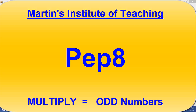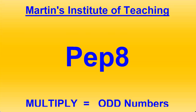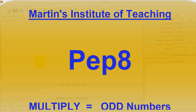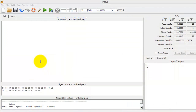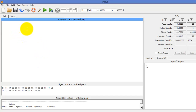Hey guys, welcome to Martin's Institute of Teaching. In this video we're going to be working with multiplying. This is the third video in the series. We're going to work a little bit more with multiplying — in the previous video we learned how to multiply by two, but if you only know how to multiply by two that leaves out a whole world of odd numbers. So let's get into that.